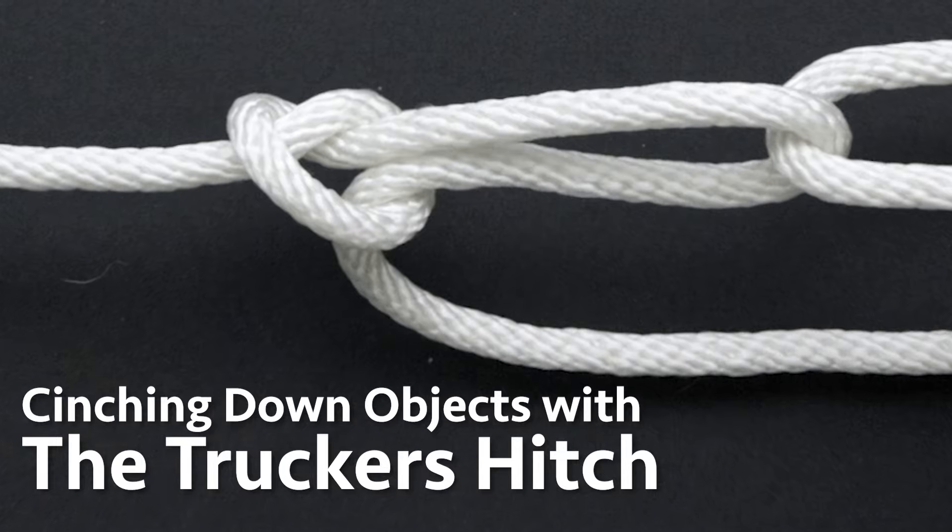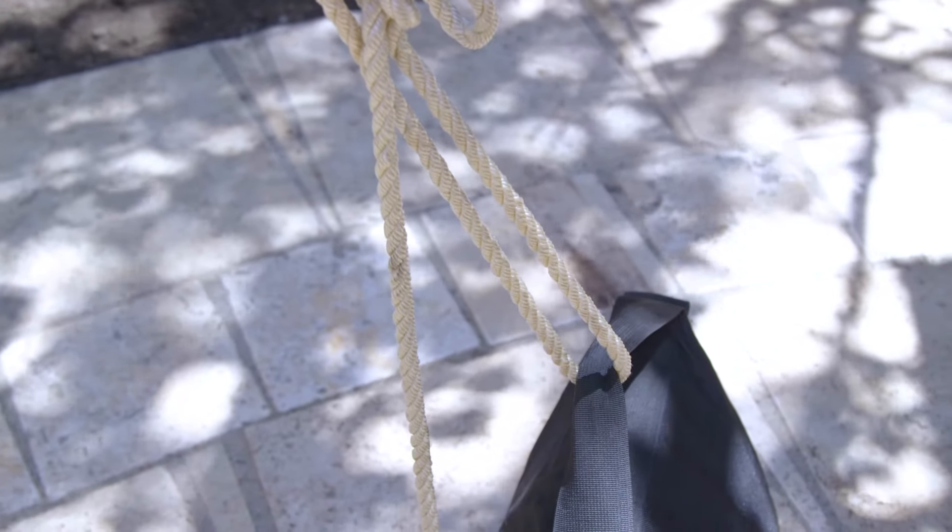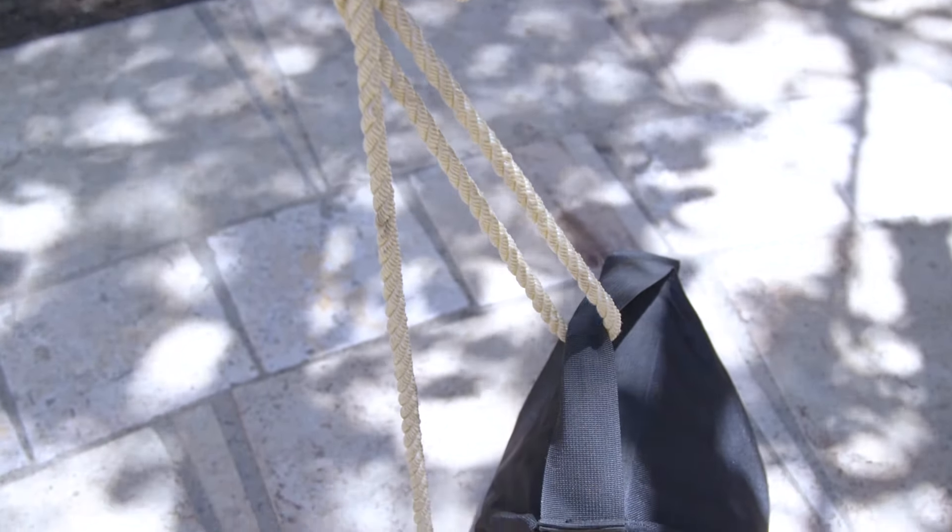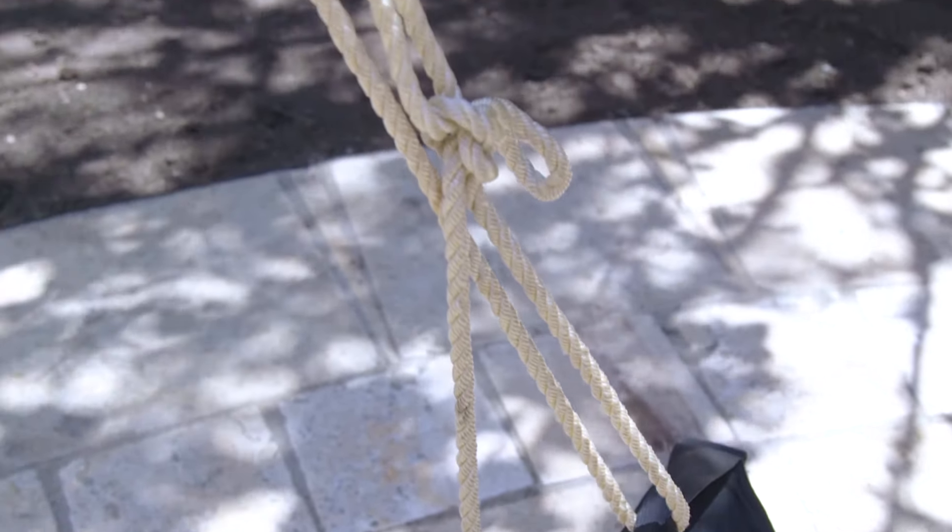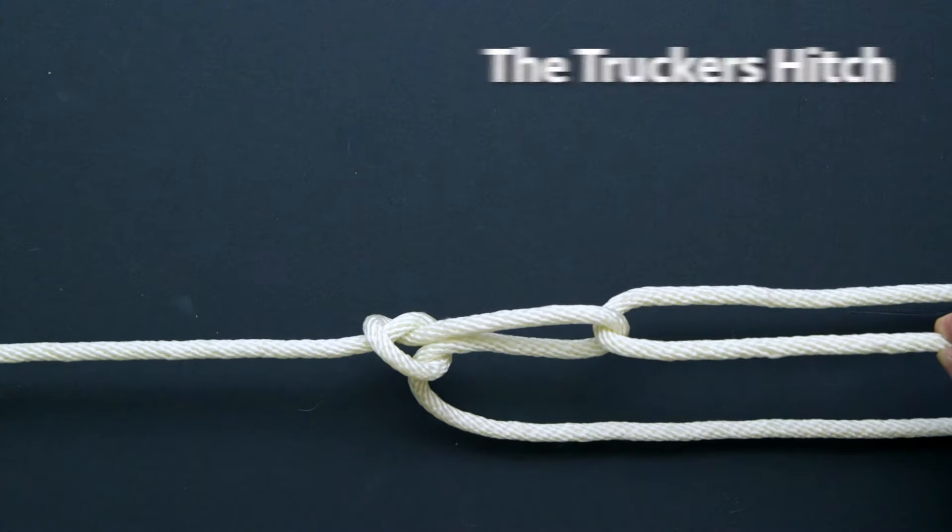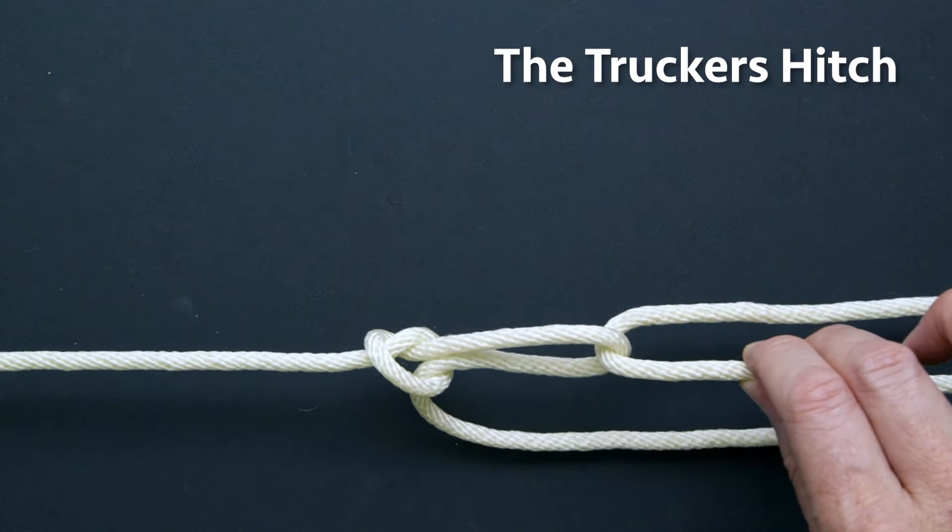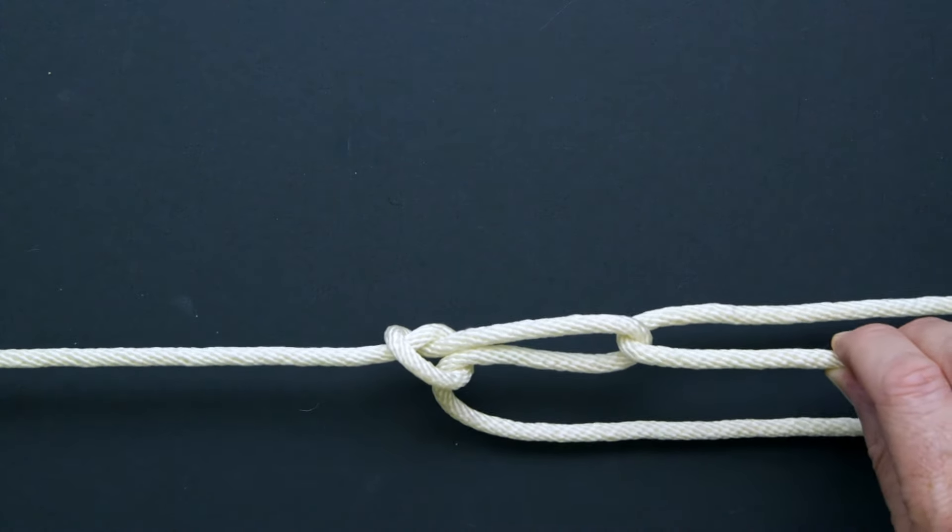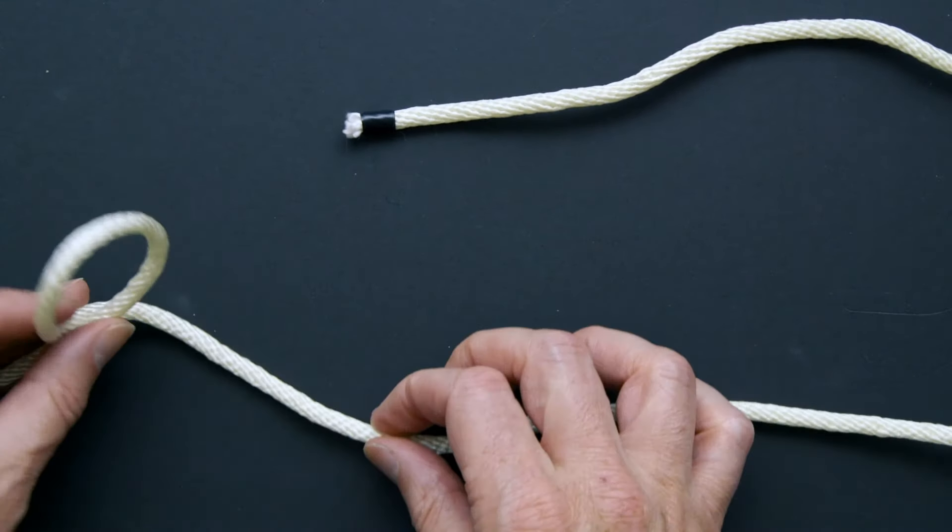The trucker's hitch is really a combination of a couple of knots, and when I first learned how to tie it I freaked out realizing how many uses it had in the real world where I was just using a square knot, like to lash things down to the top of a car. What you're doing is you're creating a block and tackle in the line that allows you to cinch down the object you're tying. You make a loop in the knot here, a slip knot.